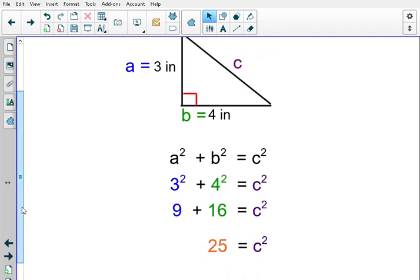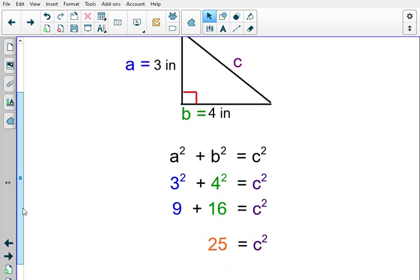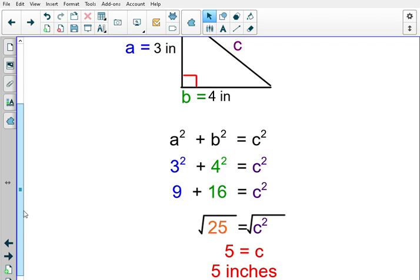Well, we don't want to know what C squared is. We want to know what just plain old C is. C squared means C times C. So, if I take the square root of these numbers, I'll be left with just one C instead of C squared. When I do that, the square root of 25 is 5. The square root of C squared is C, which leaves me with 5 is equal to C, which tells us that the missing side is 5 inches.